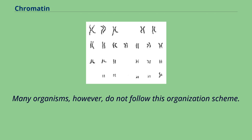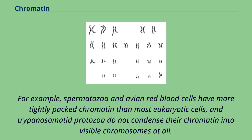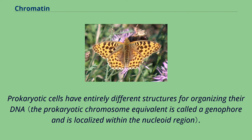Many organisms, however, do not follow this organization scheme. For example, spermatozoa and avian red blood cells have more tightly packed chromatin than most eukaryotic cells, and trypanosomated protozoa do not condense their chromatin into visible chromosomes at all. Prokaryotic cells have entirely different structures for organizing their DNA.